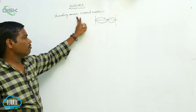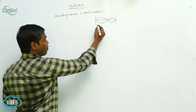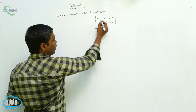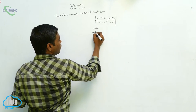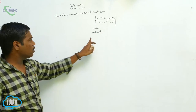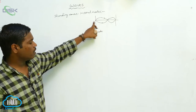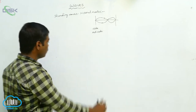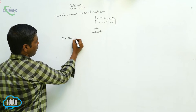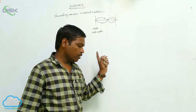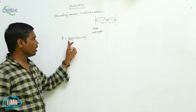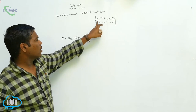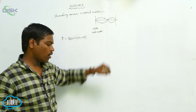In standing waves or stationary waves, where the displacement is zero or minimum, this is called a node, and where the displacement is maximum, these are called anti-nodes. Nodes and anti-nodes form in standing waves. For this, y is equal to 2a sin(kx - ωt), where 2a is the maximum amplitude. The maximum amplitude position is called an anti-node, and where displacement is zero is called a node.